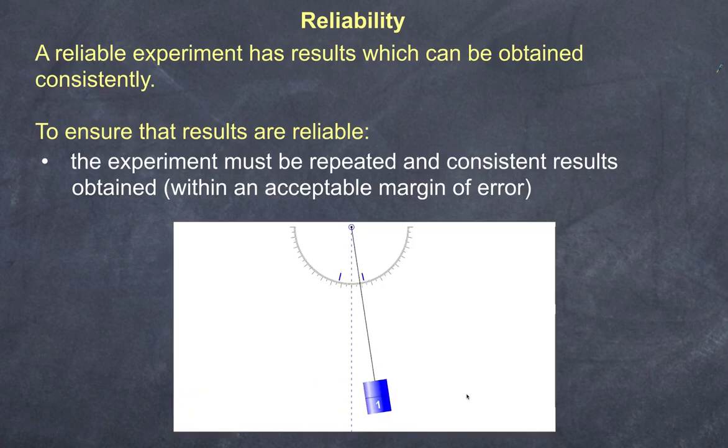So here is our pendulum and it is swinging multiple times. How do I ensure reliability? I could measure the time for one swing. Let's say I'm using a stopwatch and I start and stop the stopwatch when it reaches a single point that I determine where it stops and starts. And I do it once. Now that of course is not very reliable because I've only done it once.